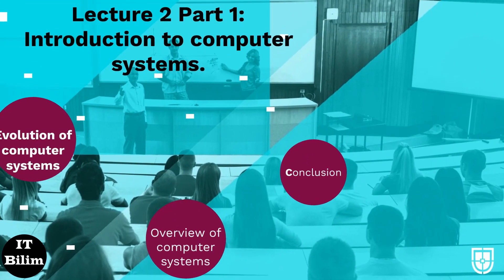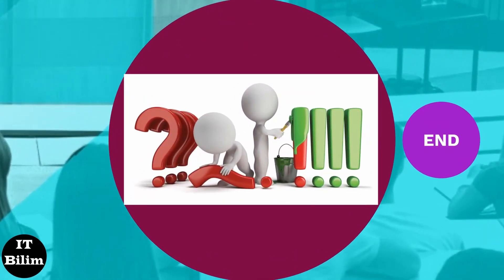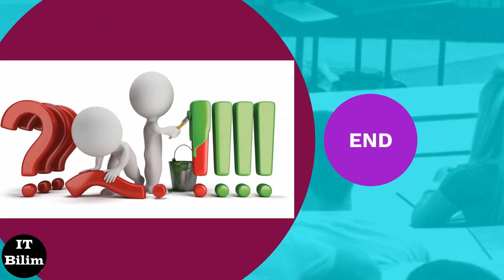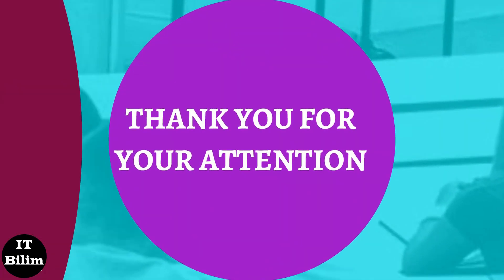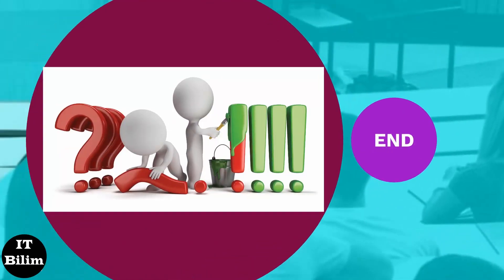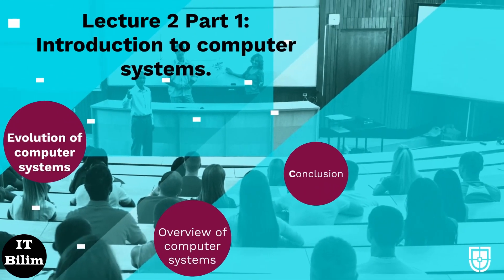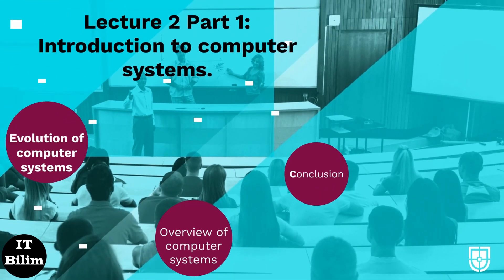Conclusion: this section covered the history of computer systems as well as the computer system of the modern world. A main conclusion is that computer systems are now everywhere, including at home, at work, in offices, shops, banks, etc. Thank you for your attention. Goodbye.